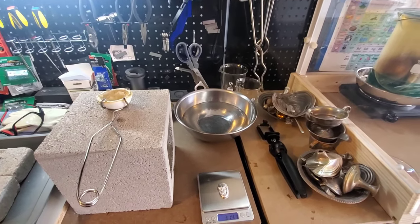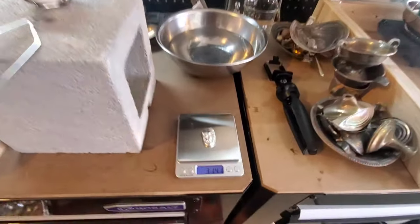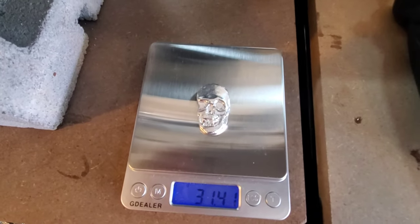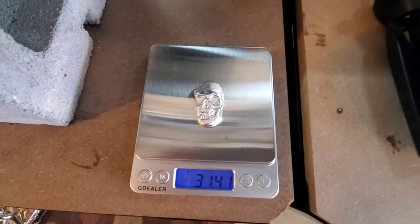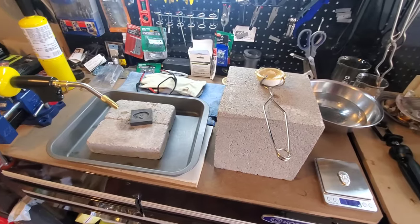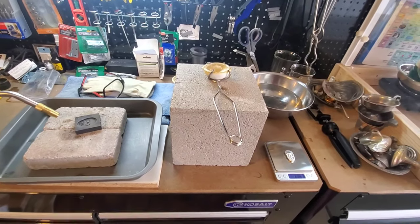All right while we're waiting for the process to take place I did have a little time. Decided to melt another one of these silver skulls. Came out pretty nice at 31.4 grams, just over one troy ounce. I think we have quite a bit of time so I might pour another one.